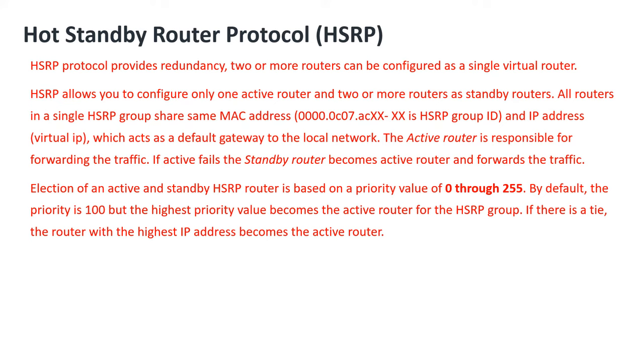By default, the priority is 100, but the highest priority value becomes the active router for the HSRP group. If there is a tie, the router with the highest IP address becomes the active router.